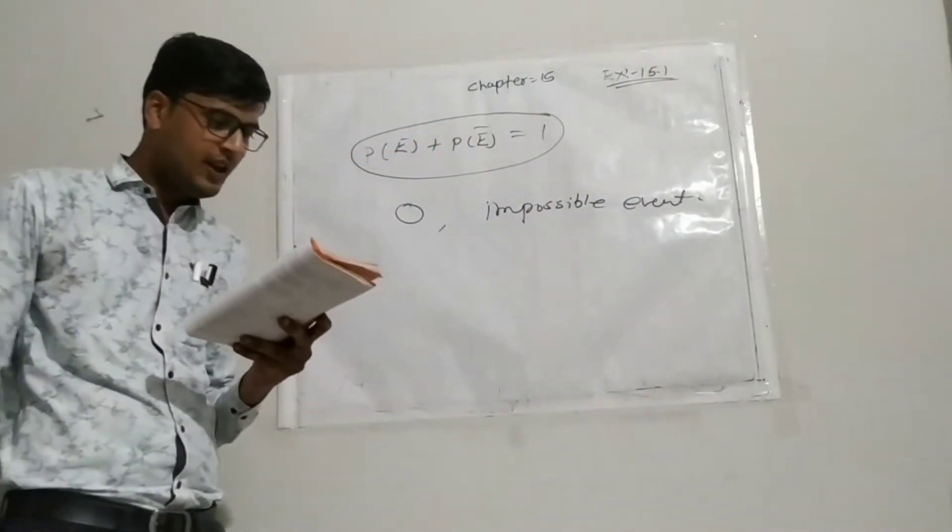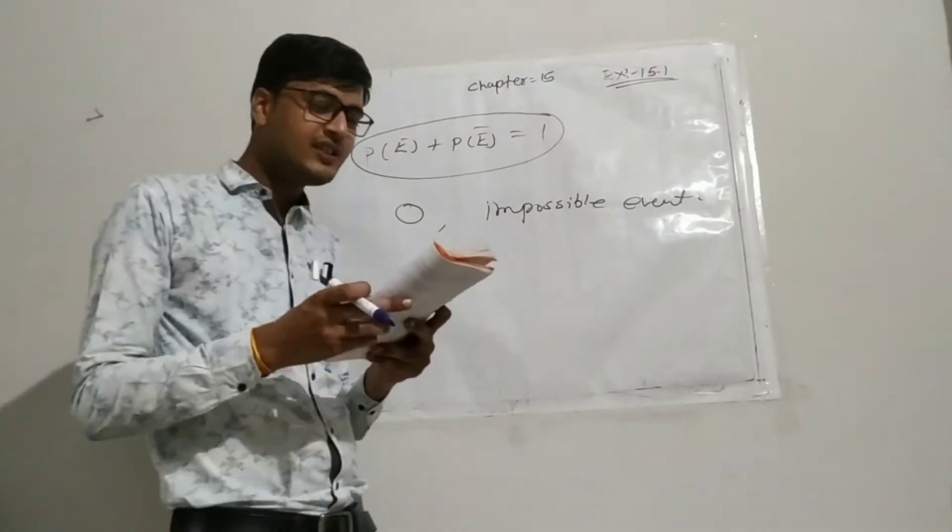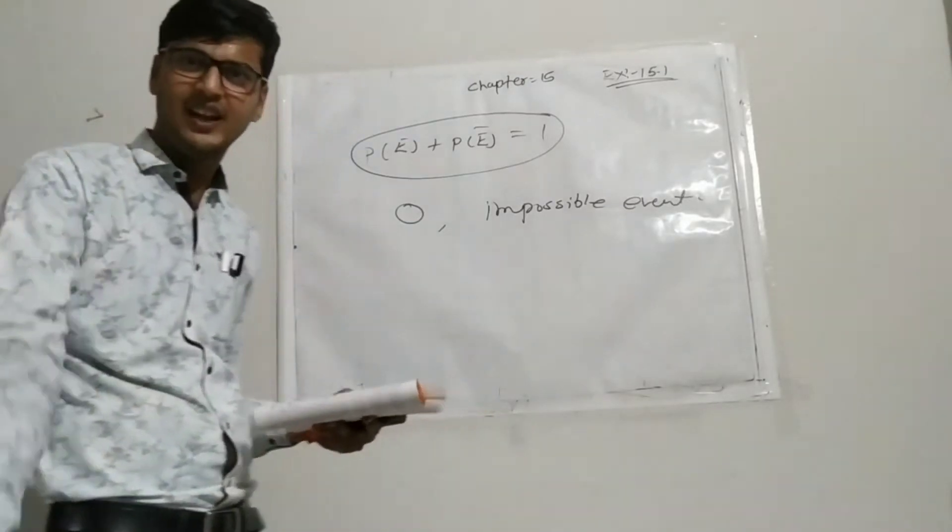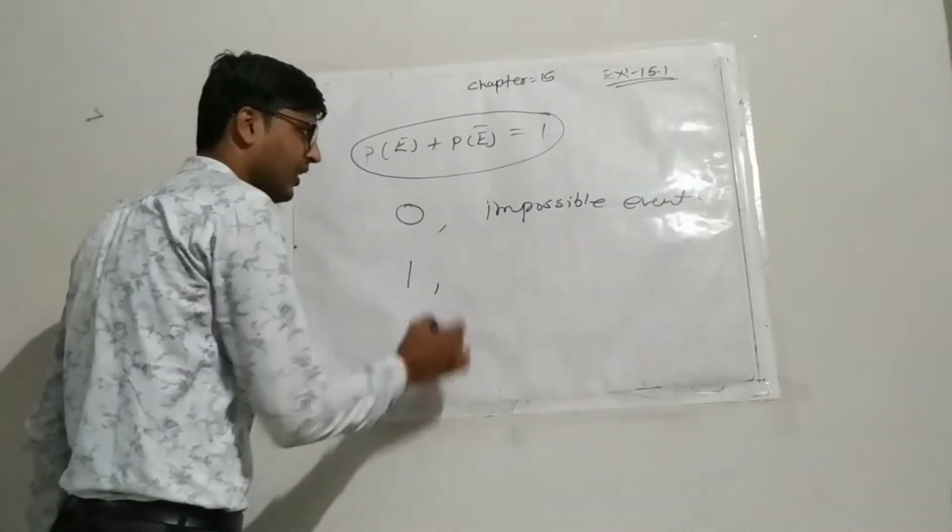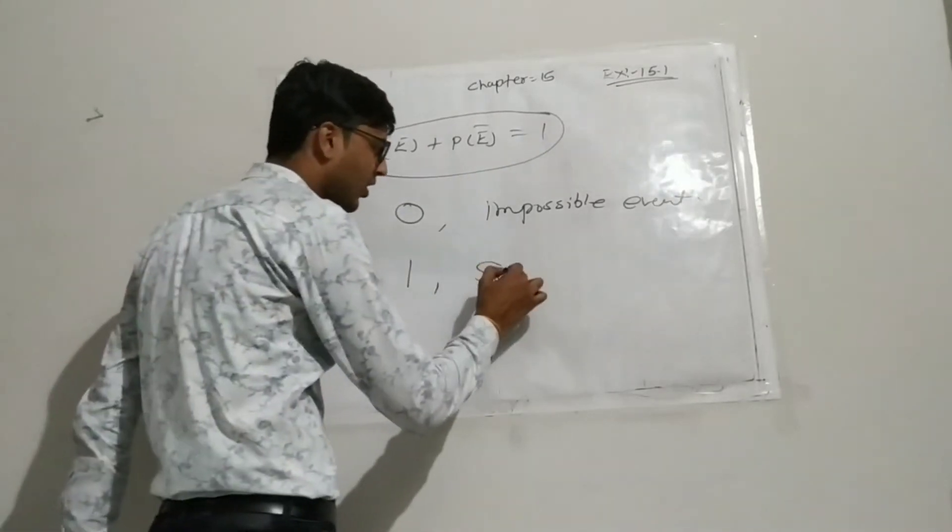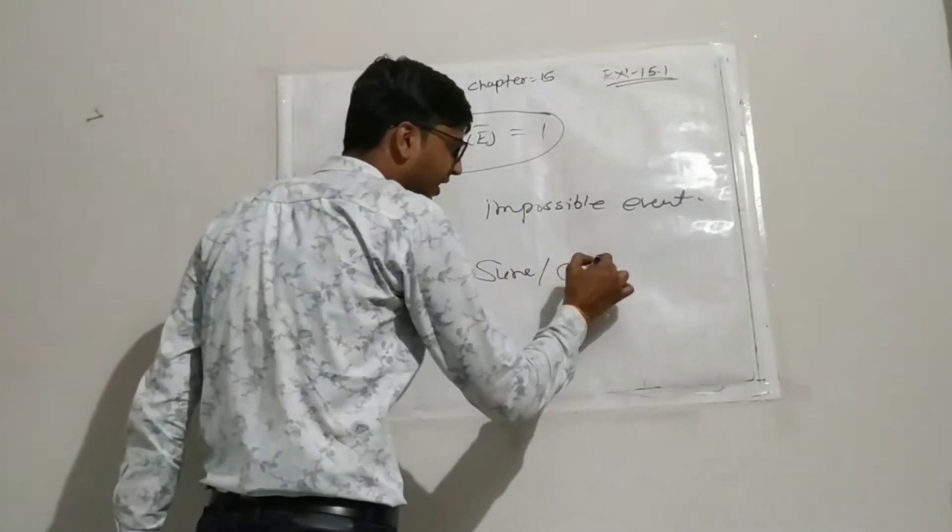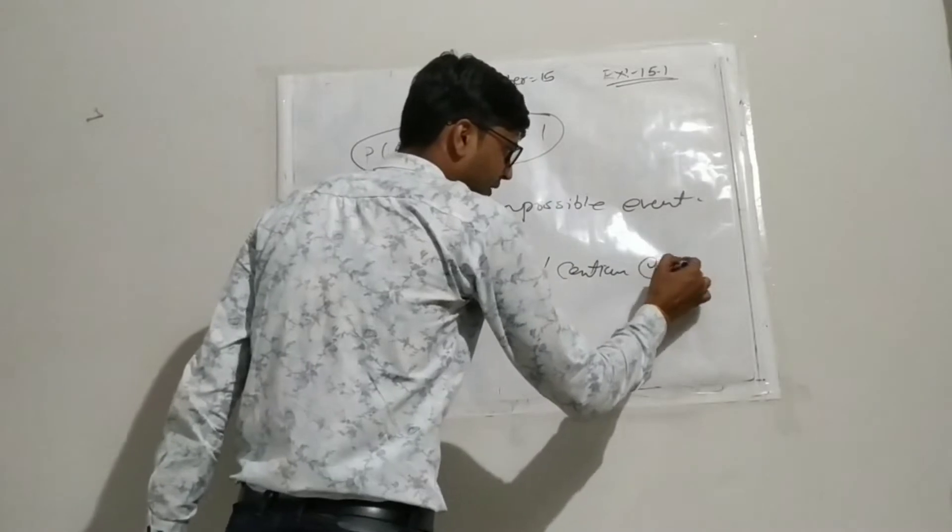Now third one. The probability of an event that is certain to happen is 1. And such type of event is called a sure or certain event.